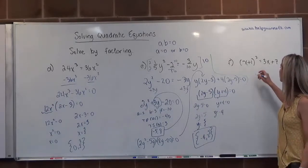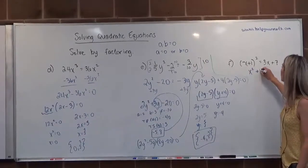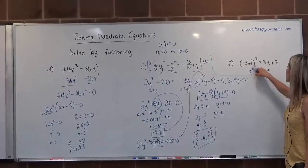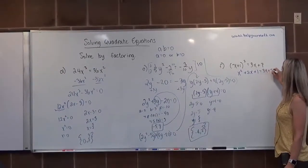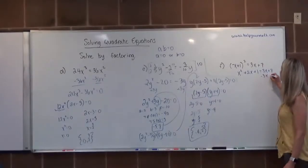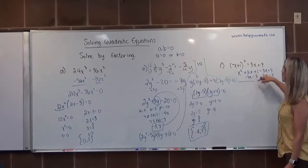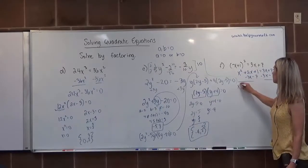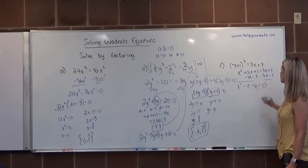That equals 3x plus 7. Now I want to set this equal to 0, so I'm going to subtract 3x and 7 from both sides. Line those up nicely with what they're like terms with. And let's simplify this. x squared minus x minus 6 is equal to 0.